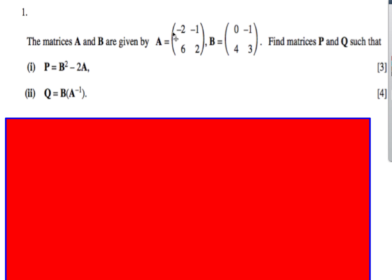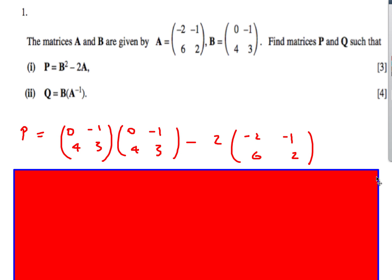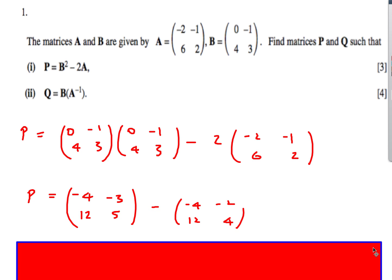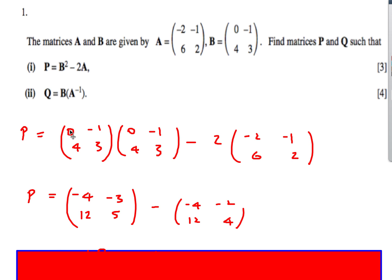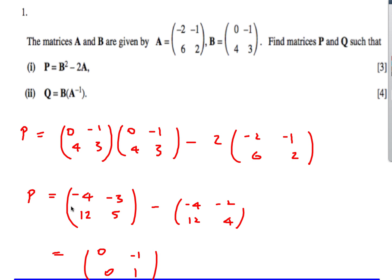Next question: given matrices A and B, find matrix P where P = B² - 2A. B squared means B times B — we can't just square the individual numbers. Using matrix multiplication row by row, and then computing 2 times A, we subtract the two results term by term: (-4) minus (-4) = 0, (-3) minus (-2) = -1, 12 minus 12 = 0, 5 minus 4 = 1. So matrix P equals (0, -1, 0, 1).